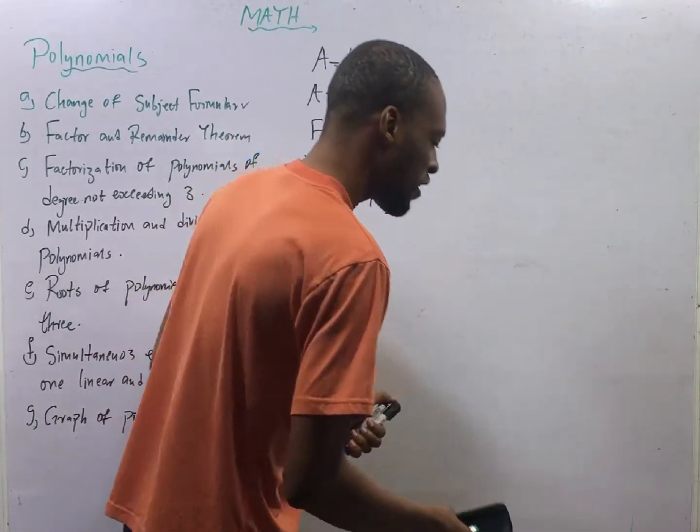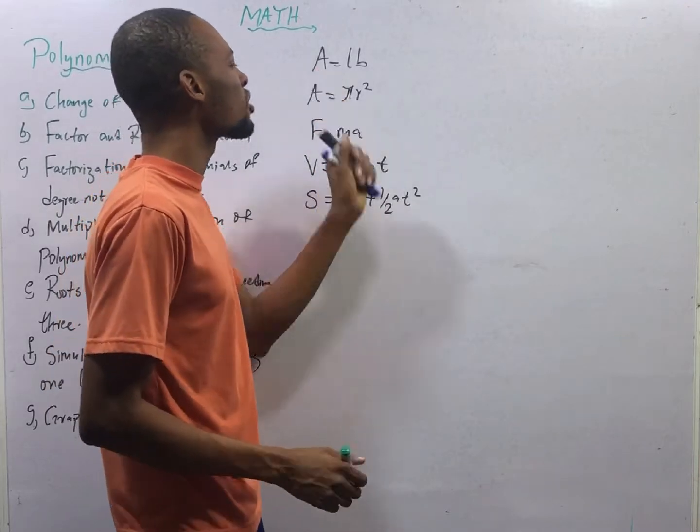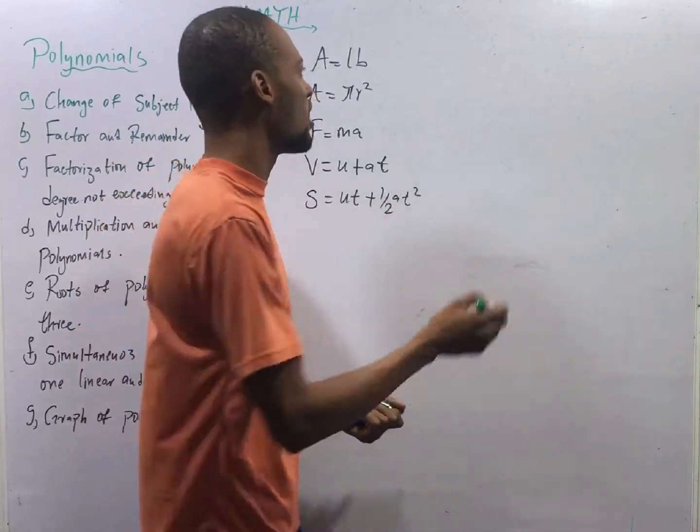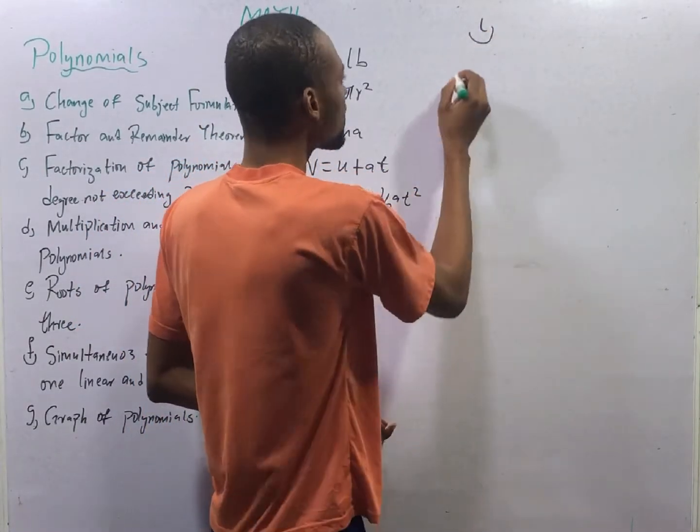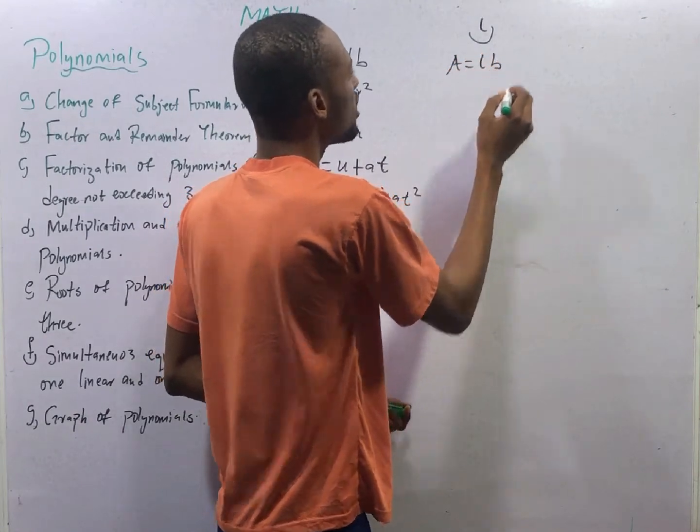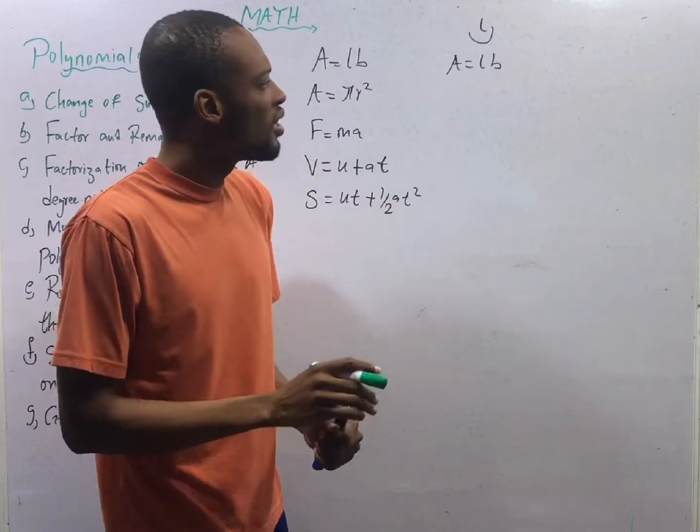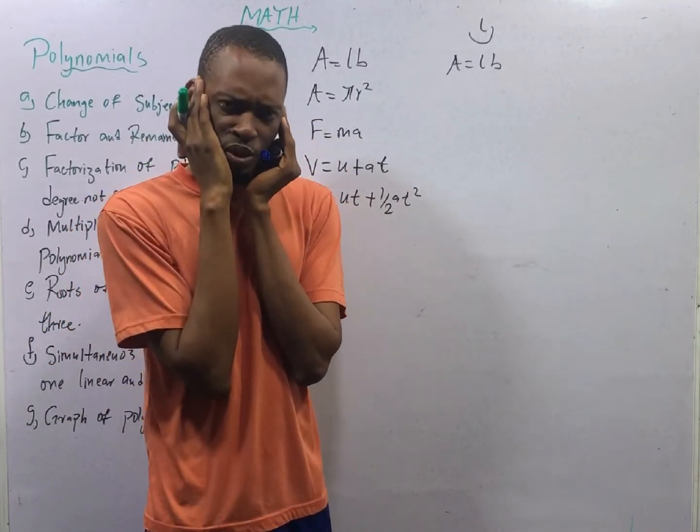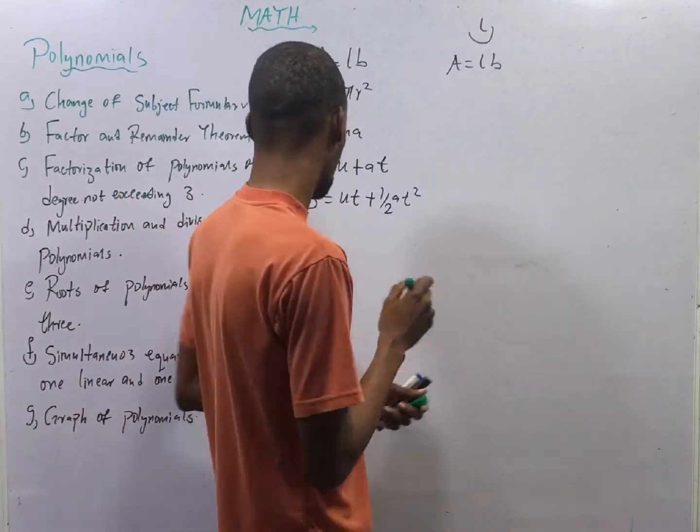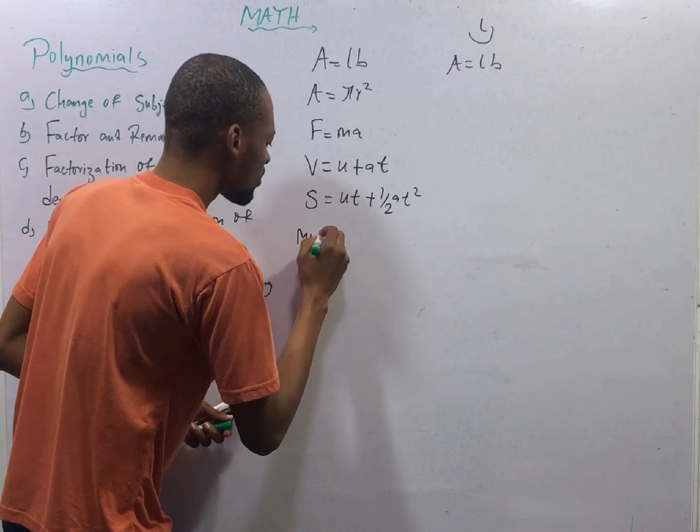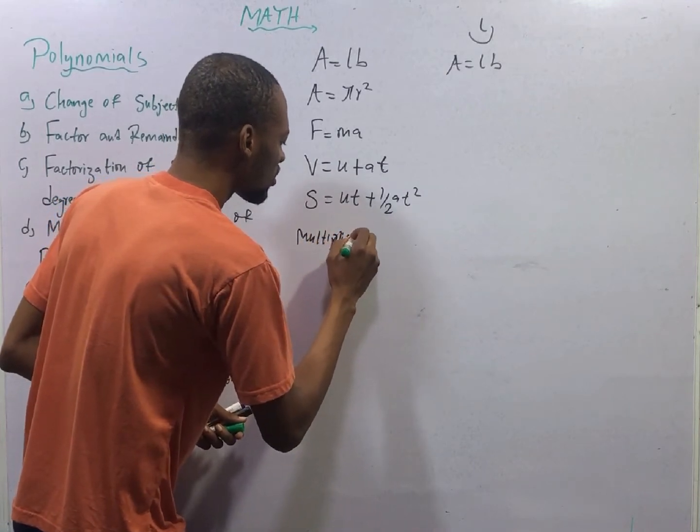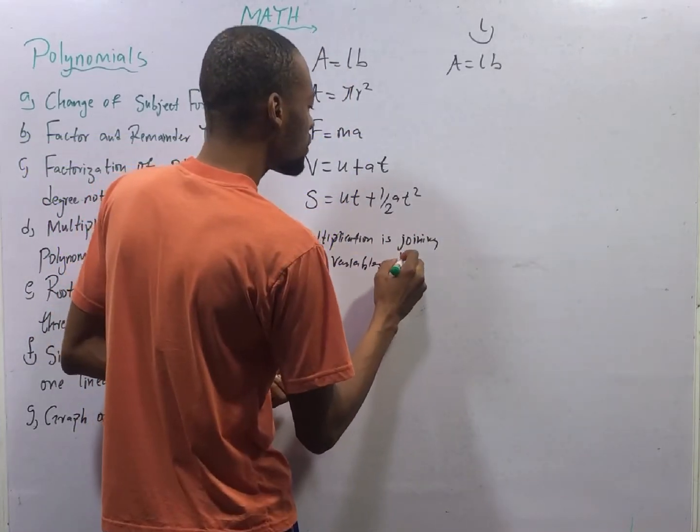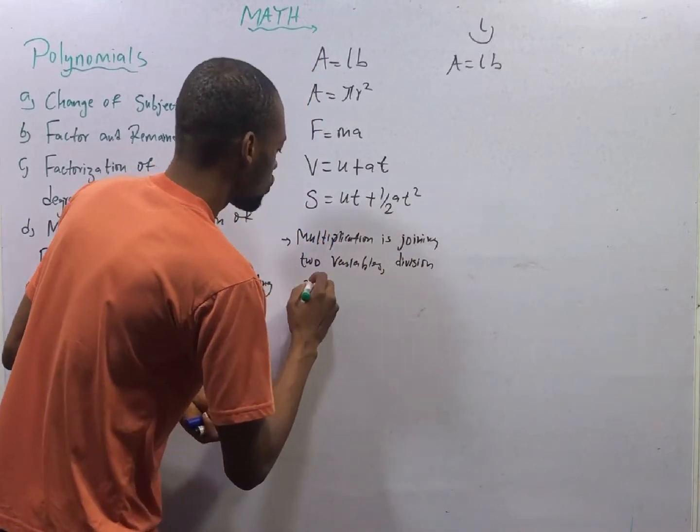Let's look at the first equation here. A is the subject formula. If I say make L subject formula, what do you do? You say that A equals LB. When dealing with Change of Subject Formula, whenever multiplication is joining, division should come.